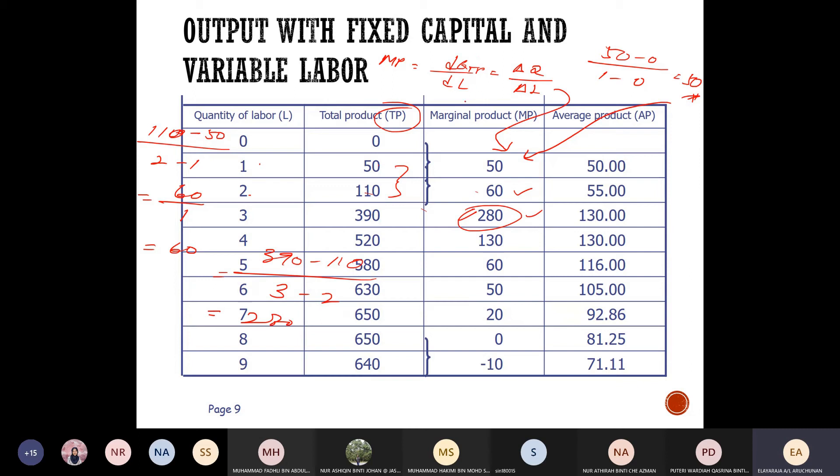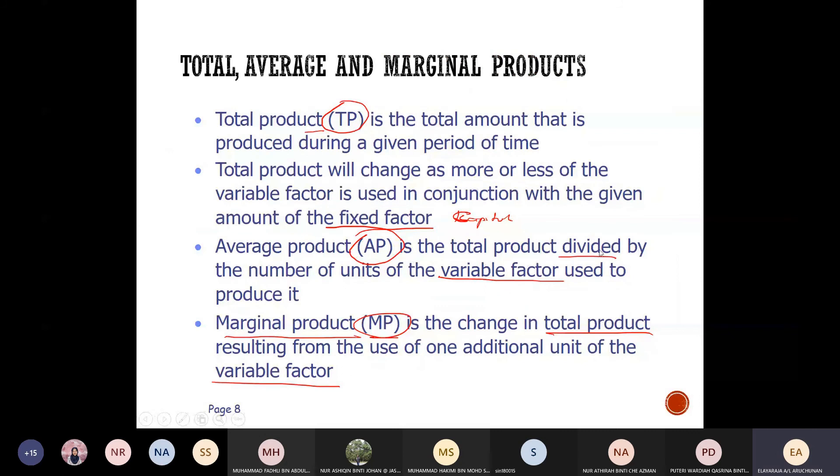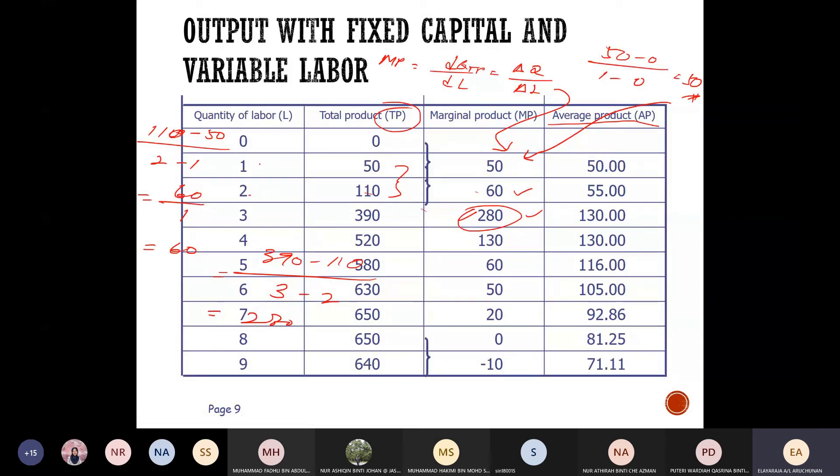Average products. What does it mean? Average product is the total product divided by the number of the unit of the variable factor. What is the variable factor? Excellent, fantastic. So as you can see that the total production is 110, divided by the quantity of labor is 2, so 110 divided by 2 you get 55. How do you get average products? So 390 divided by 3 and you get 130 and so on.